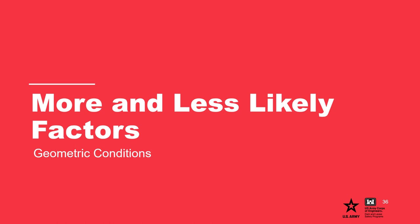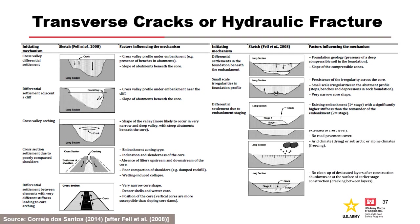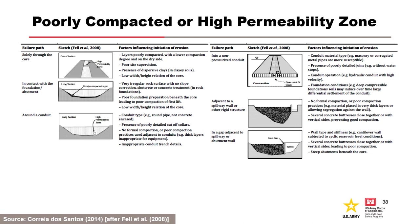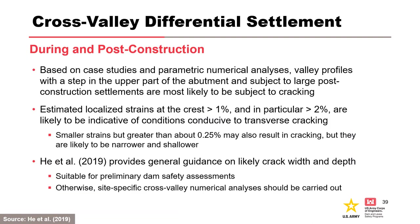Summary tables from Fell et al. 2008 provide an overview of mechanisms for transverse cracks and hydraulic fracture, and for poorly compacted or high permeability zones in the embankment. With regards to cross-valley differential settlement, valley profiles with a step in the upper part of the abutment subject to large post-construction settlements are most likely to be subject to cracking, based on case studies and parametric numerical analyses.